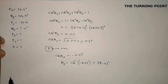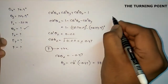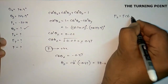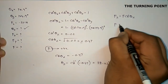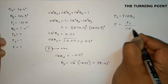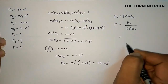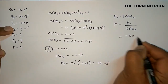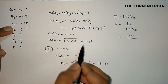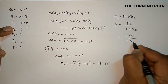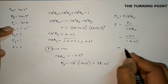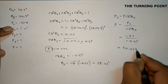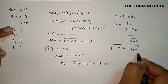Next, we calculate Fx and Fy, but first let's find the magnitude F from Fz. Since Fz = F·cos theta z, we get F = Fz / cos theta z = minus 52 / minus 0.47. Simplifying, we get F = 110.64 newtons.